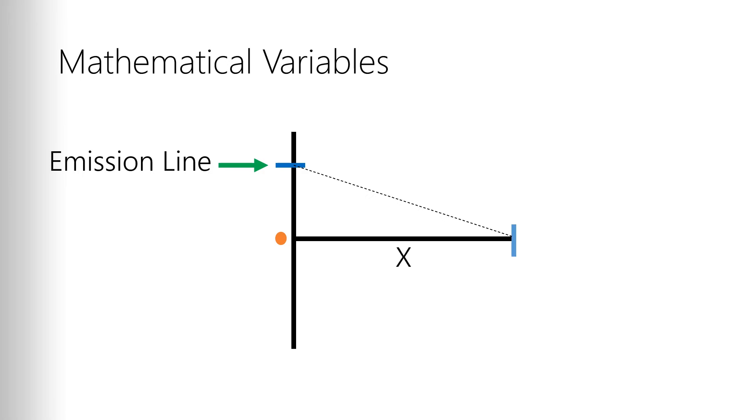So that gives you the x-axis, the distance from the light source to the diffraction grate, which we've set as 100 centimeters. And you'll get the y-axis, the distance from the light source to the emission line.